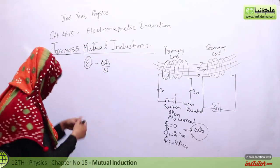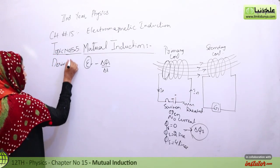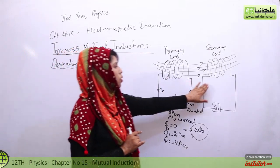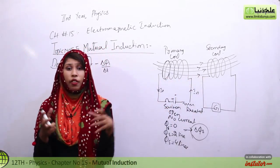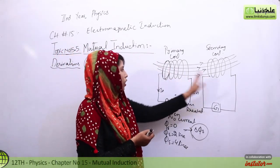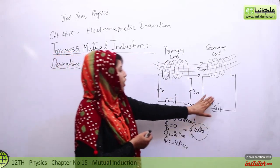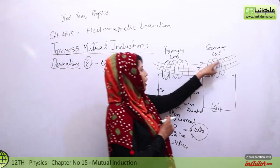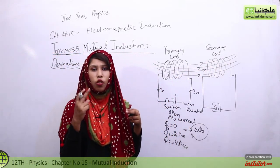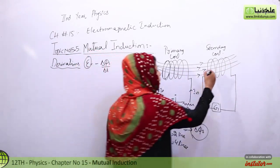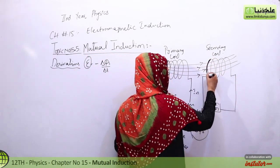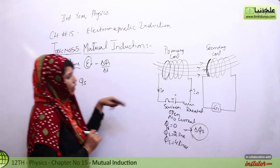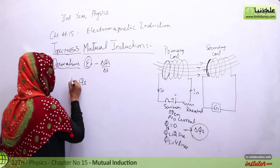Now let's start with the derivations. In the derivations, we can see the result of the mutual induction process — that means how the two coils mutually interact with each other. We call it mutual induction, and through this we generate EMF. Now, if we take the secondary coil in which there are n number of turns, the flux of one loop we call phi-s, and for n number of loops the total flux is n times phi-s.